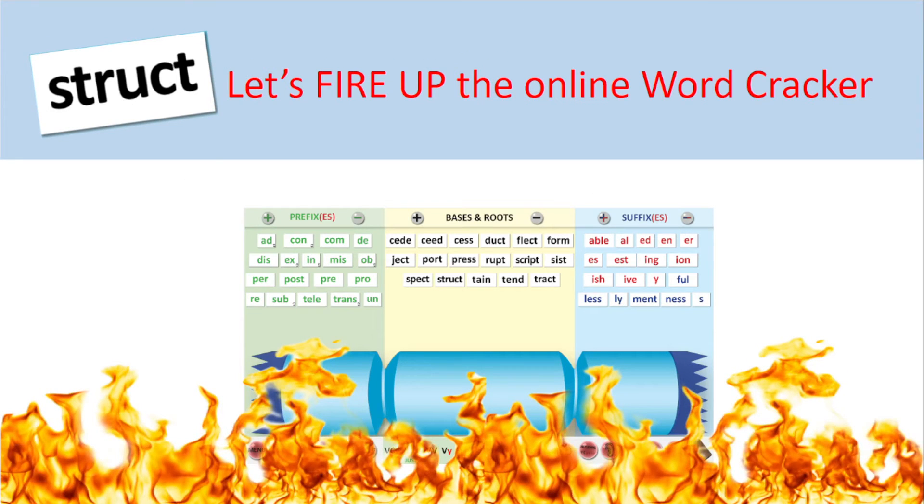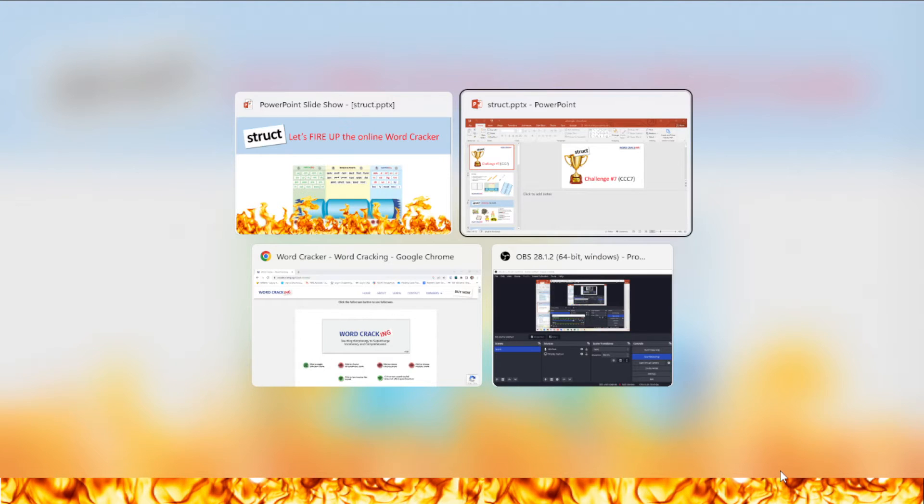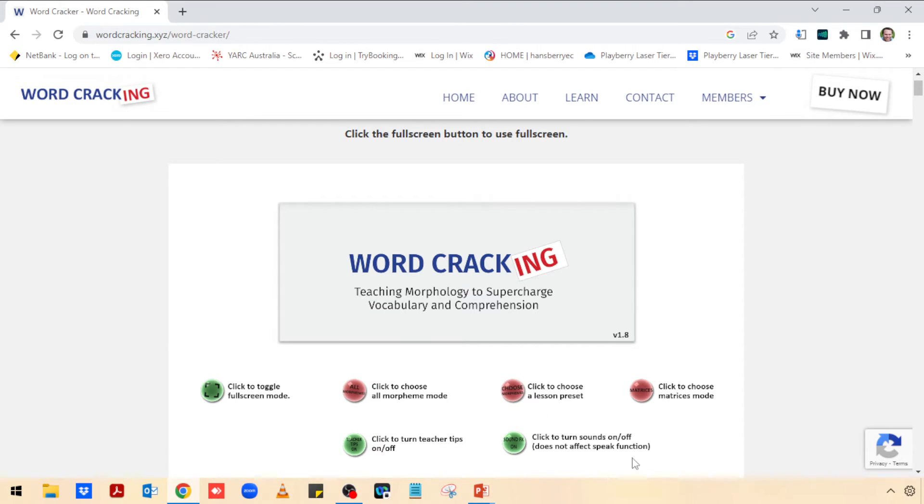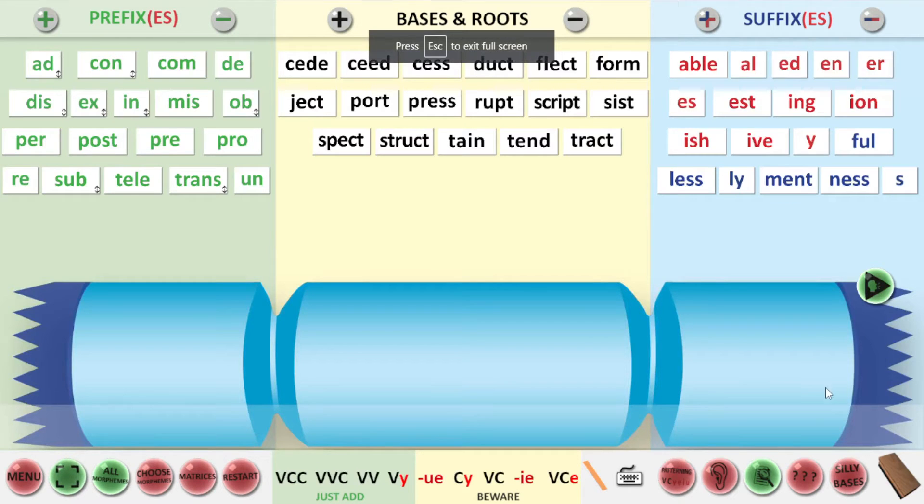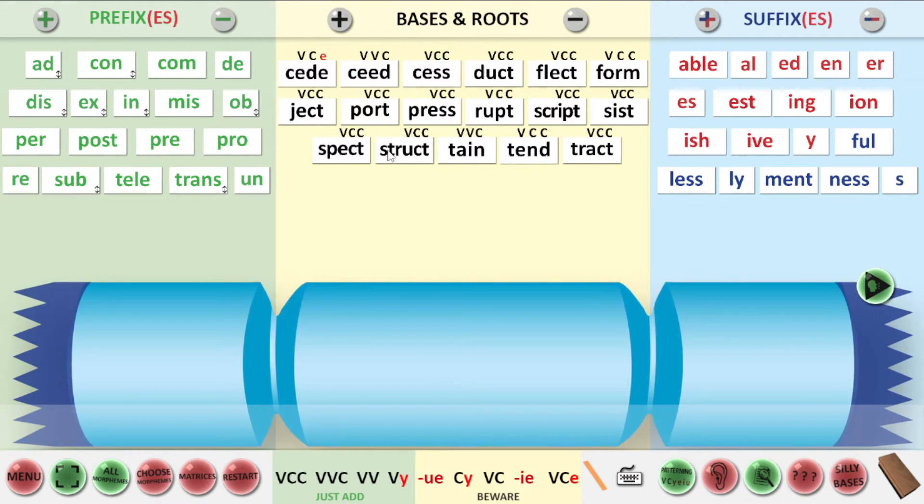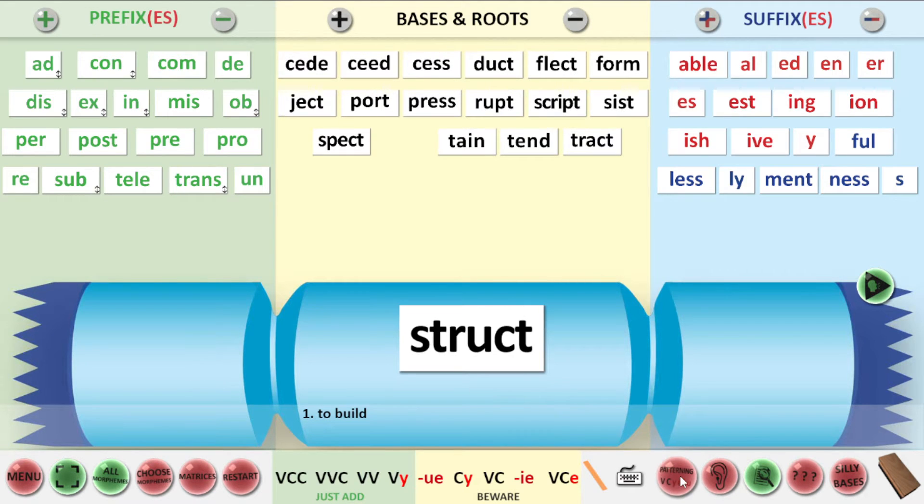Okay, so it's time to fire up the word cracker now. So we'll just go to the word cracker. There we go. We need to turn on all morpheme mode. Let's go full screen. We're going to have our meanings on. And just for a little while, we'll have our patterning on, too. So let's pull down struct just to check that we can just add any suffixes to it. And we can. It's one of those safe VCC endings, and the just add tick is up. So anything we're building today, we don't have to worry about doubling, dropping, or changing. So we'll turn our patterning off.